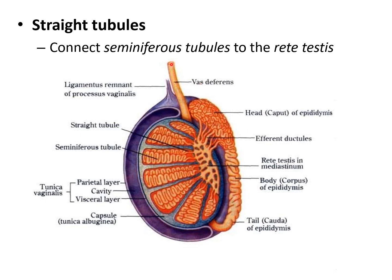About the straight tubule: it connects the seminiferous tubule to the rete testis. This is the seminiferous tubule in the lobule of the testis, and this is the rete testis, connected by the straight tubule. So, seminiferous tubules are connected to the rete testis by straight tubules.